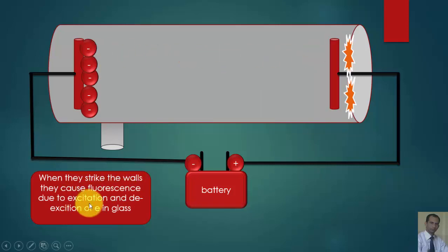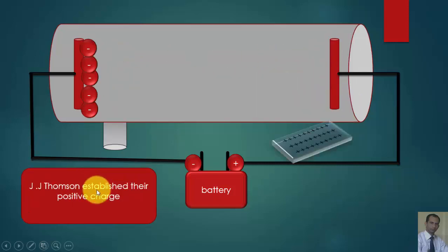When they strike the walls, they cause fluorescence due to the excitation of the gas. When these radiations are coming from the cathode side and going towards the anode side, striking the wall of the tube or anode, they cause fluorescence. If some fluorescent material is applied over here. It was Thompson who established they are negatively charged. He kept a positive metal plate on this side of the tube.